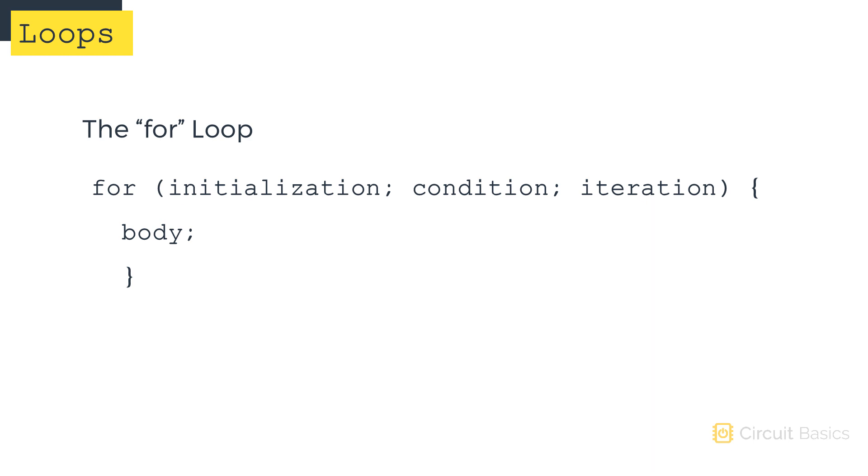Another type of loop is the for loop. For loops are typically used to increment and decrement counters. They can also be used to initialize large numbers of pins at the same time.